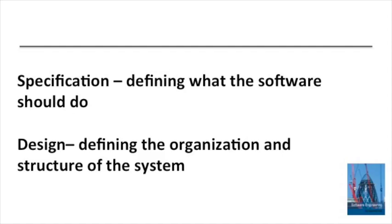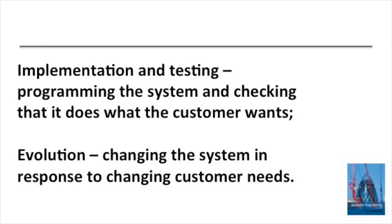There are many different formal software processes, but there are four fundamental activities which we see in all of these processes, sometimes in different forms. These activities are: specification, setting out what the software should do; design, organising the structure of the software; implementation and testing, developing the programs making up the software system and testing that these are free of bugs and meet the requirements; and evolution, changing the system after it's gone into use.